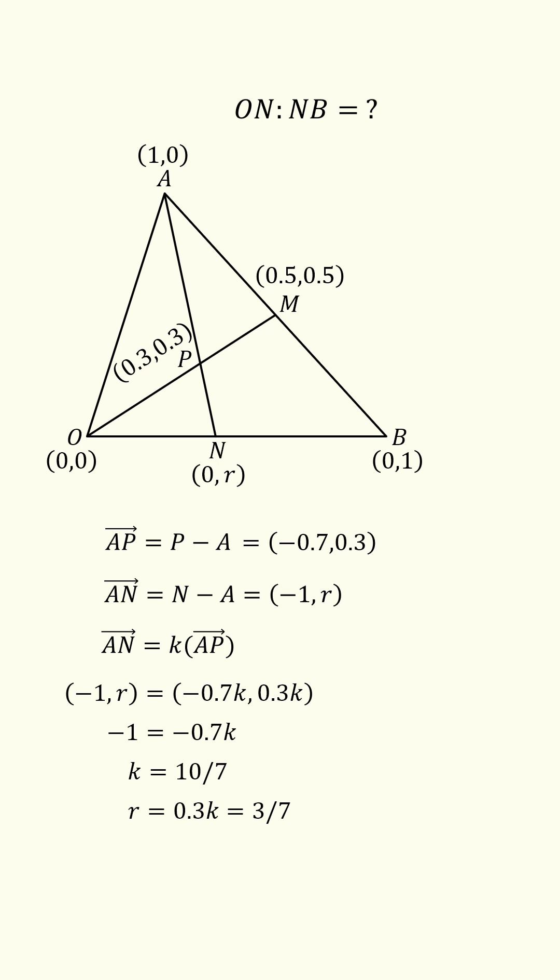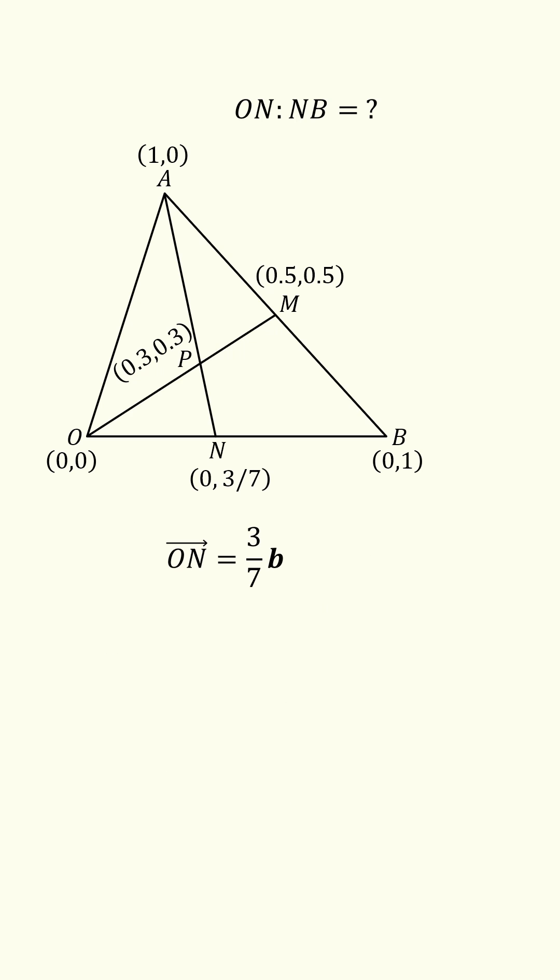This means that r is equal to 3/7, so the coordinates of N are (0, 3/7). This means that ON is equal to 3/7b, and NB is equal to 4/7b, so the ratio ON to NB is equal to 3 to 4.